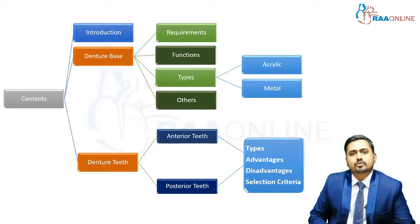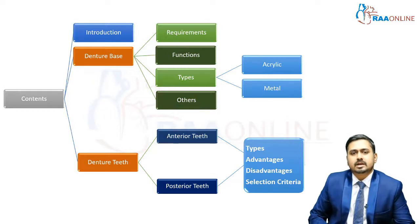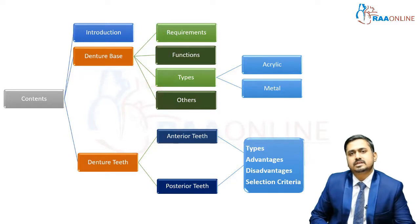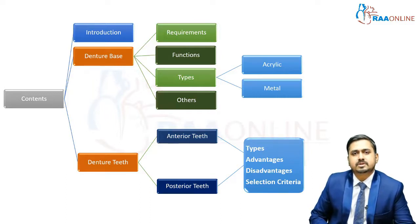The contents of today's topic will include a basic introduction of what is a denture base and denture teeth. Then we will discuss about your denture base and denture teeth in detail. In your denture base, we will see about your basic requirements, functions, types, and various other aspects in designing. Whereas in your denture teeth, we will discuss about your anterior teeth selection, types of teeth, and the advantages and the basic selection criteria. Similarly, we have a set of segments in which we will be discussing about your posterior replacement teeth.